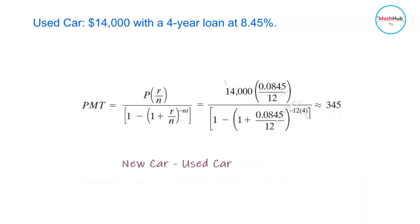The difference in the monthly payment of the new car loan and the used car loan is $609 minus $345, which is equal to $264.